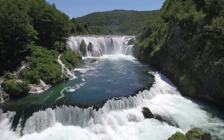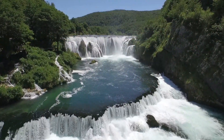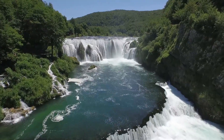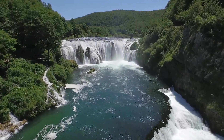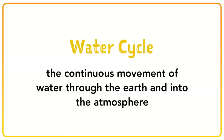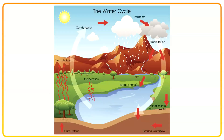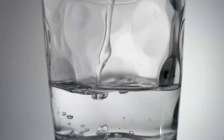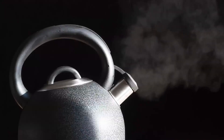All water travels through an impressive path called the water cycle. The water cycle is the continuous movement of water through the Earth and into the atmosphere. This movement does not stop. In this cycle the water changes forms too. These different forms are liquid, gas, and solid.